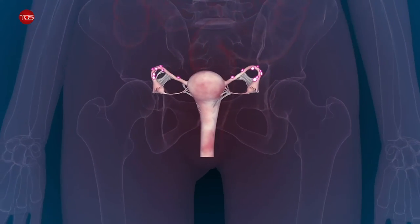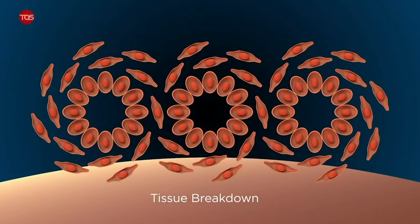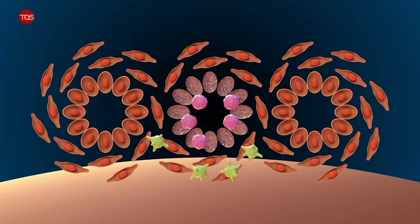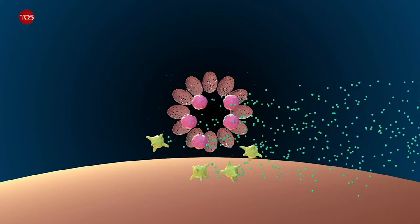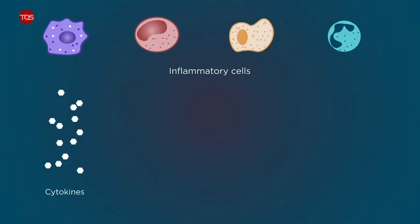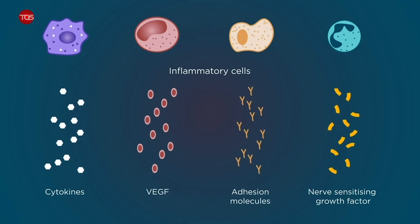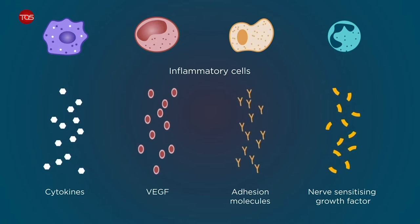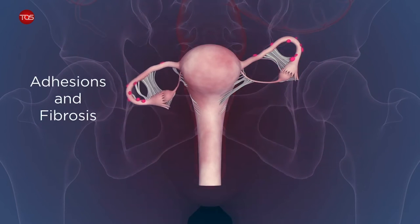Endometriosis tissues grow in the proliferating phase of the menstrual cycle and stabilize in the progestogenic phase. During the menstrual phase, when progesterone is withdrawn, endometriotic tissues break down, unlike the healthy endometrial tissues which leave the body during menstruation. Cells that die during endometriosis lesions trigger an inflammatory response, and activated inflammatory cells secrete pro-inflammatory cytokines, growth factors, adhesion molecules, and nerve sensitization factors into the microenvironment of endometriotic lesions. This repeated cycle of inflammation induces new vascularization, nerve sensitization, and the formation of pelvic adhesions and fibrosis.